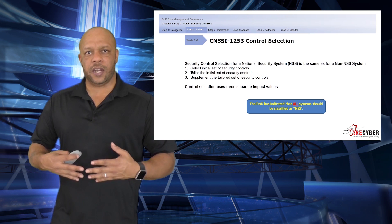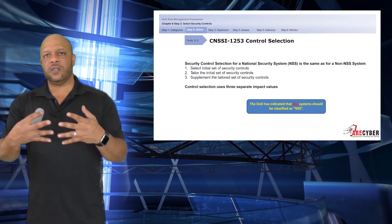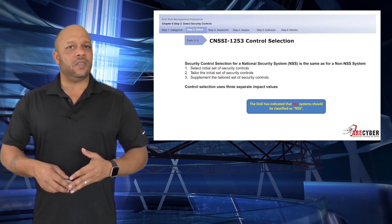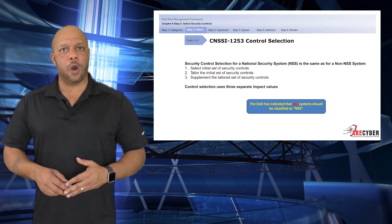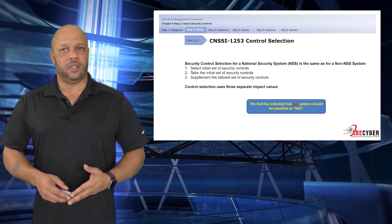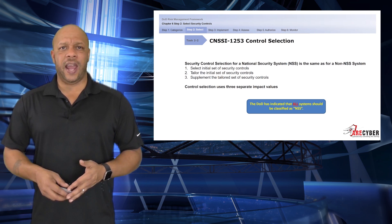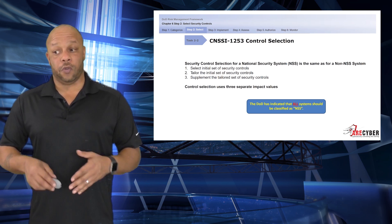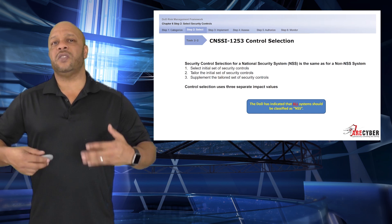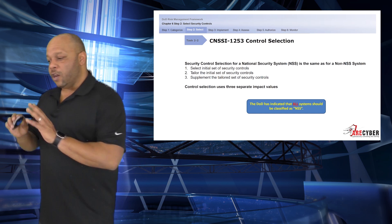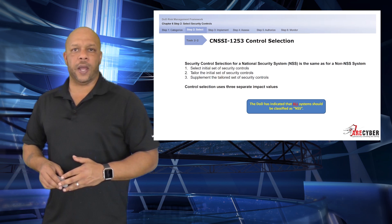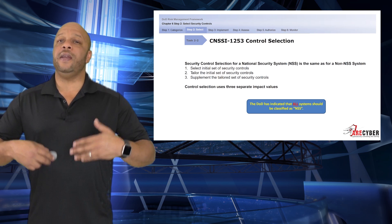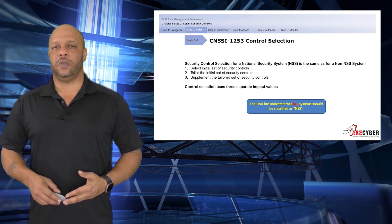Next, let's take a look at the CNSS 1253 itself. This is going to provide you an overall baseline for security controls — this is the security control selection for all national security systems. The core steps are still the same: select the initial set of security controls, tailor the initial set to the system, and then supplement the tailored set for the system requirements. All DoD systems have been indicated to be national security systems.